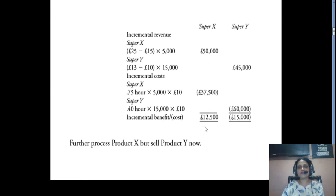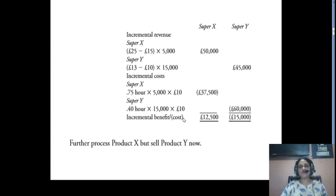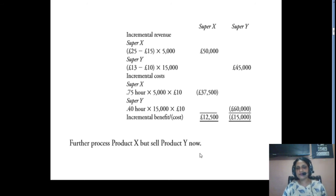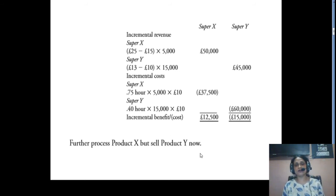In the case of Super X, there is an incremental benefit of £12,500. But in the case of Super Y, there is an incremental loss of £15,000. So it is advisable to further process X to Super X, but it is not advisable to further process Y to Super Y. The recommendation is: further process Product X but sell Product Y as-is. These are the various decision-making situations dealt with by CVP analysis.